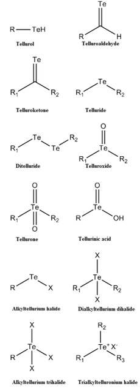Hydrotelluration — compounds of the type R2TeH react with alkenes with anti-addition to give Z-alkenes. In contrast, hydrostannylation, hydrozirconation, and hydroalumination in similar reactions proceed with syn-addition.